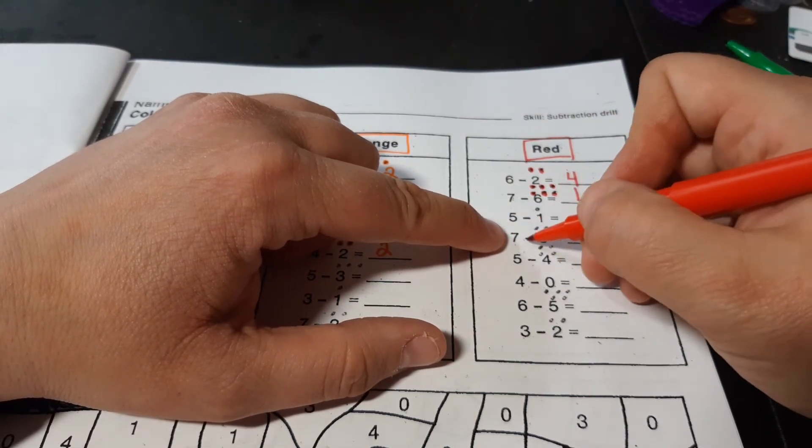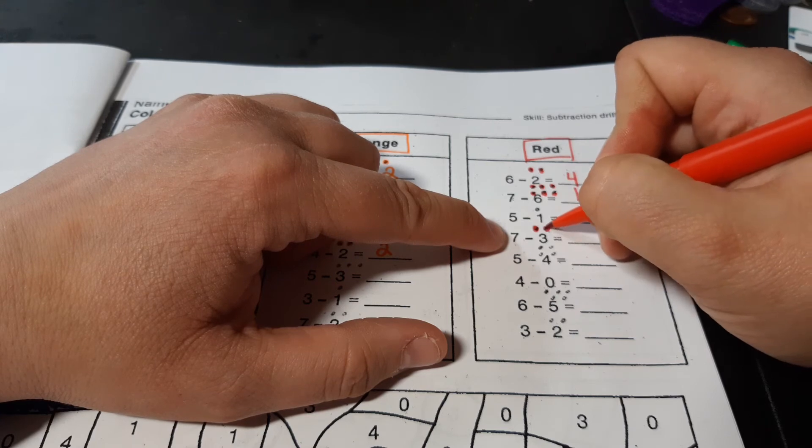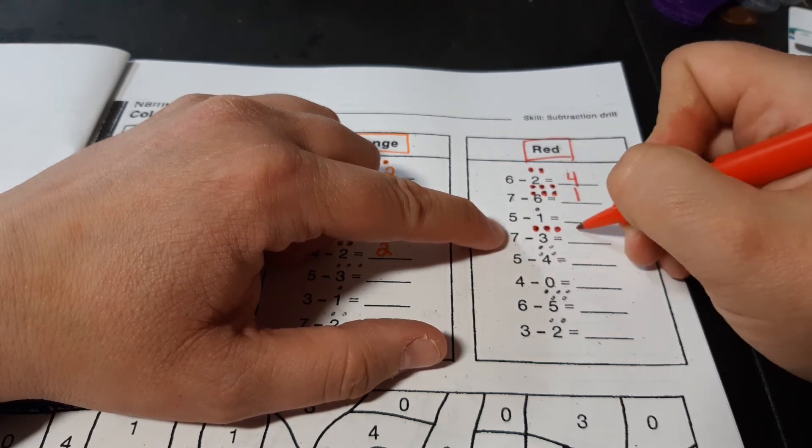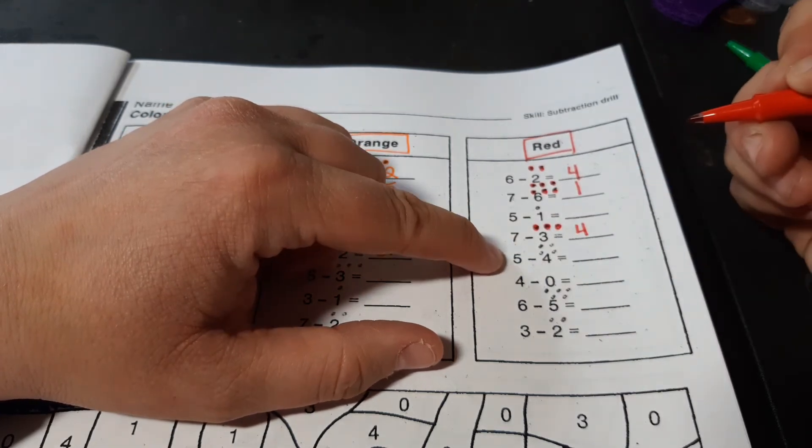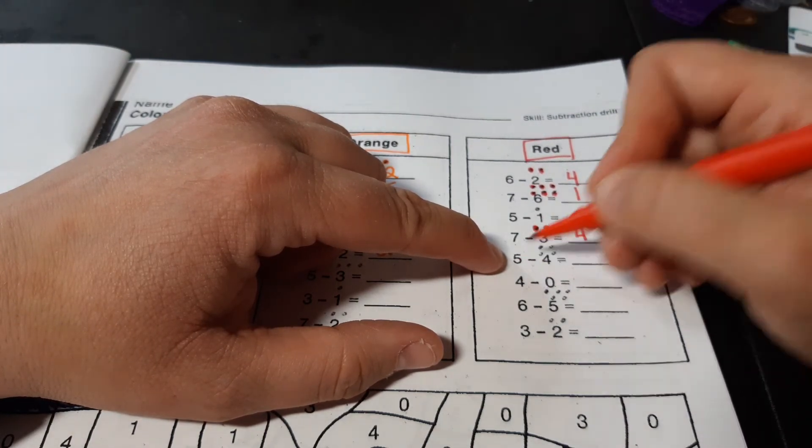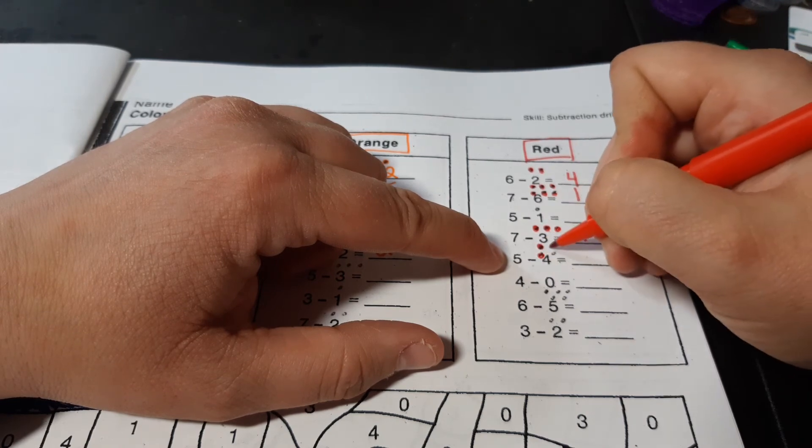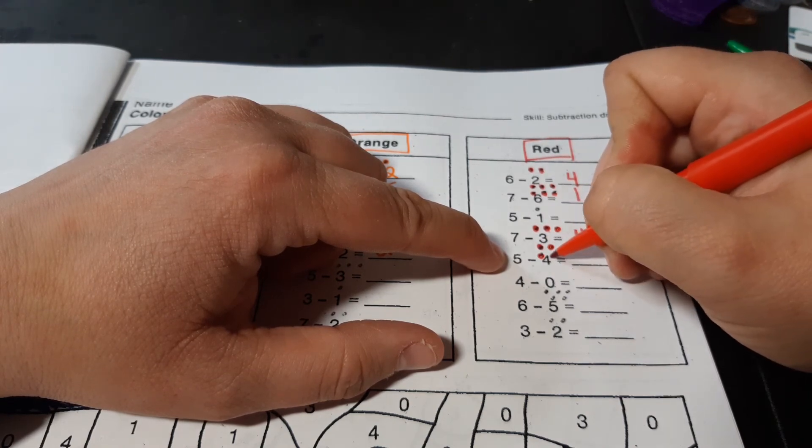7 minus 3. 7, 6, 5, 4. And we have 5 minus 4. 5, 4, 3, 2, 1.